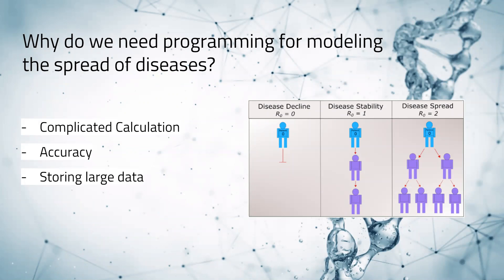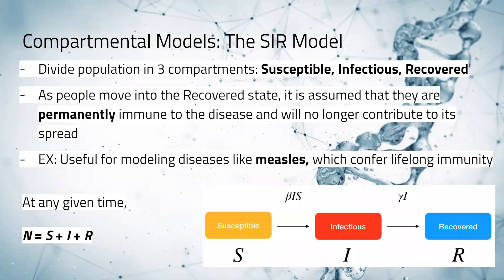Now we want to ask ourselves: why do we need programming for modeling the spread of disease? First of all, the calculation is complicated. A model for the spread of disease would have lots of variables and the data are constantly changing and updating. You will want to keep accuracy when analyzing all these data, and this is why we're choosing programming over all other methods. Now I'll pass on to my teammate Henry to talk about our first model, the SIR model.